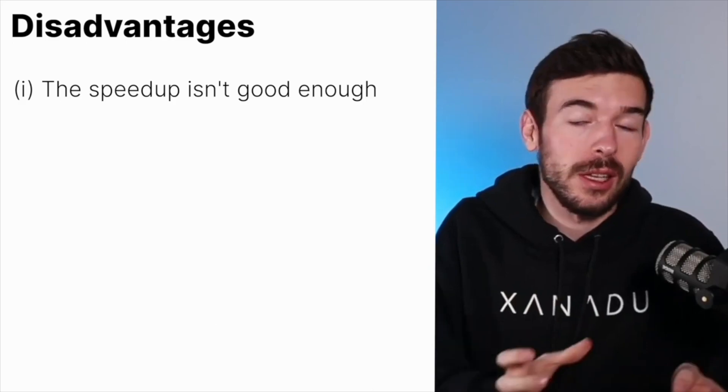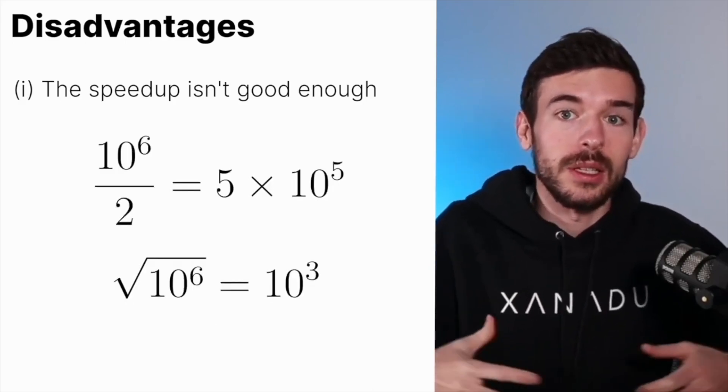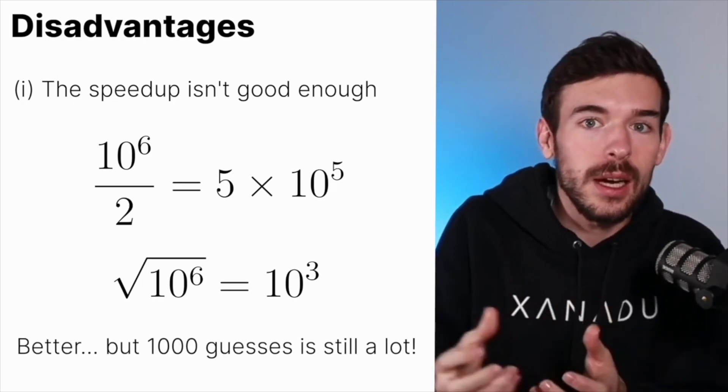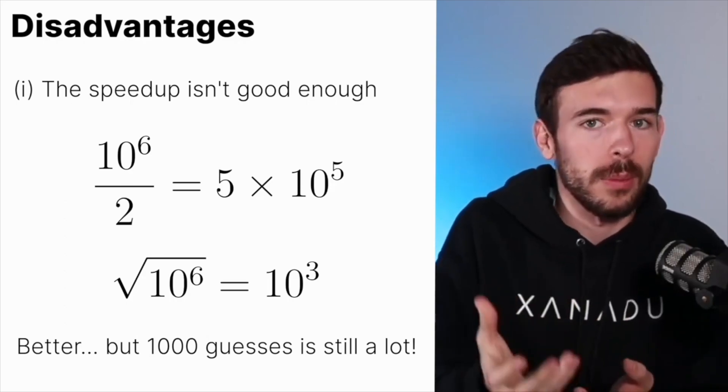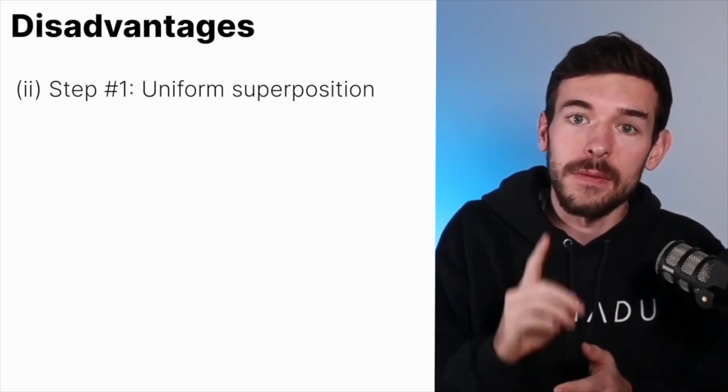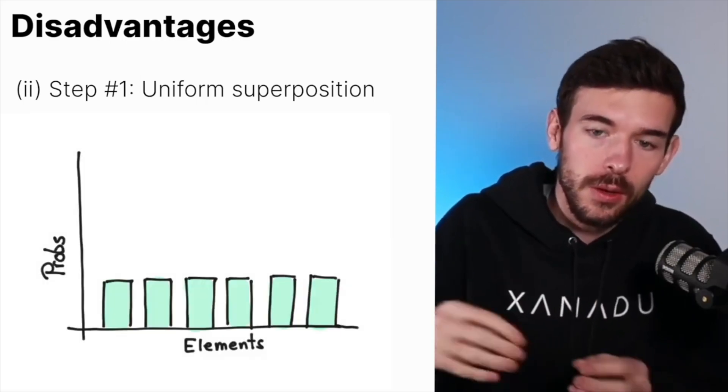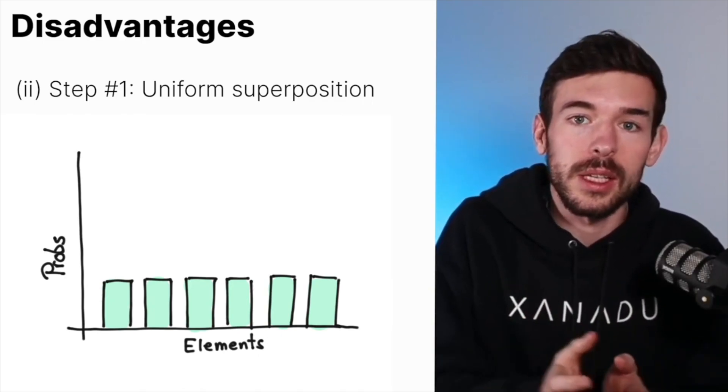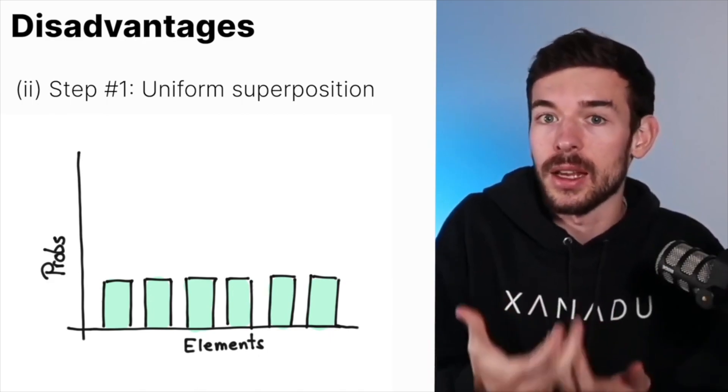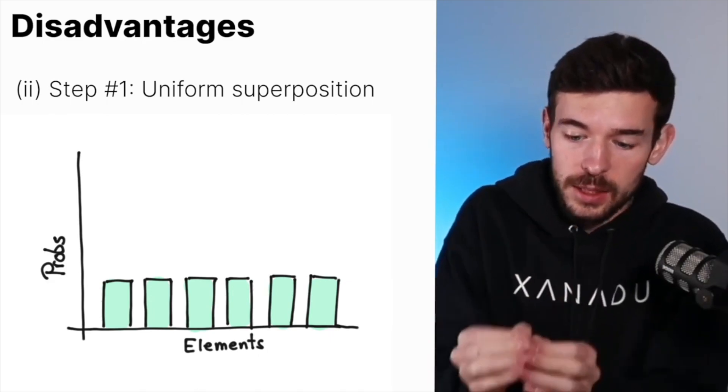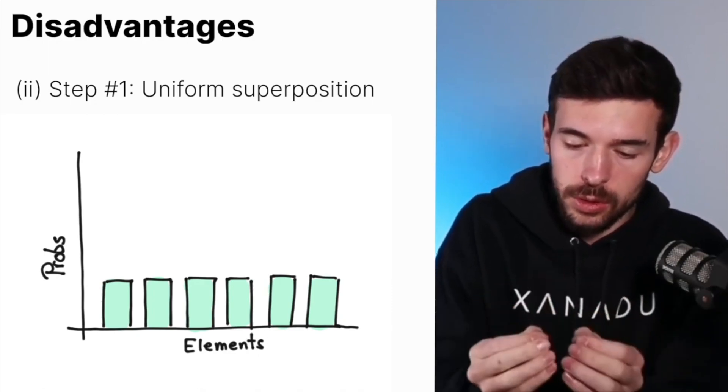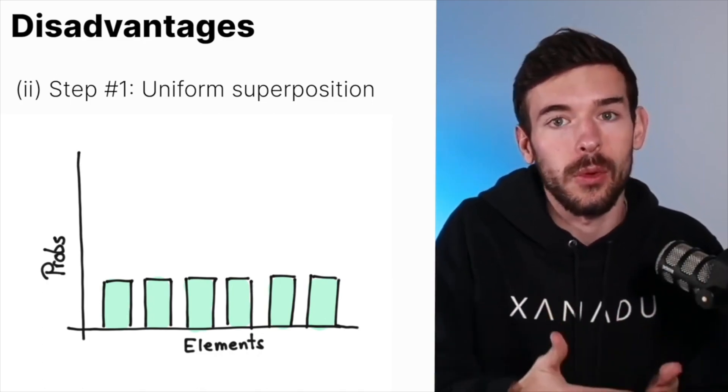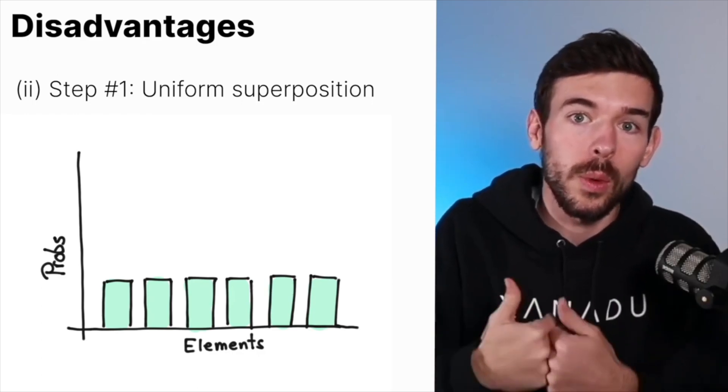First of all, sometimes a quadratic speedup is not good enough. In some scenarios, we work with a huge dataset. So this quadratic speedup over the linear one doesn't allow us to solve all the problems. And in second place is the first step of the process, the creation of the equal superposition of the elements that we are interested in. In our example, we just applied some Hadamards because that was an easy example. But sometimes we are given a specific dataset, very concrete, very unique elements that the fact of creating this superposition is going to be a hard problem. So we have to find the equilibrium and know when we are going to need to use Grover.